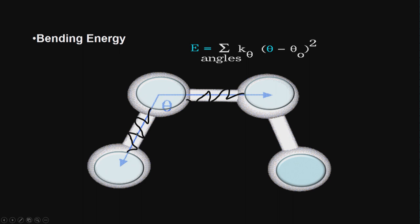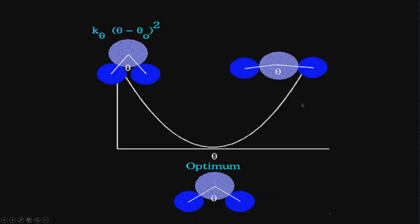For bending energy, you have 3 atoms and 2 bonds where the angle can compress or expand. Again a quadratic form is used: E = summation of kθ(θ − θ0)², with 2 parameters θ0 and kθ. You sum over all bonds where bending occurs. This gives a parabolic relation — obtuse or acute both lead to energy increases, with the optimum at θ0.